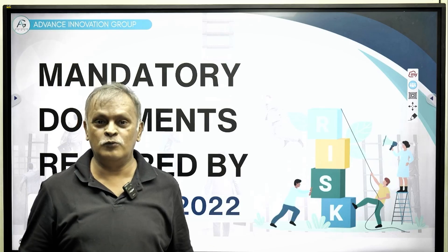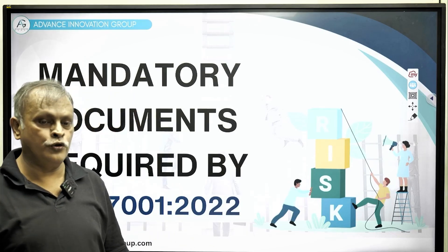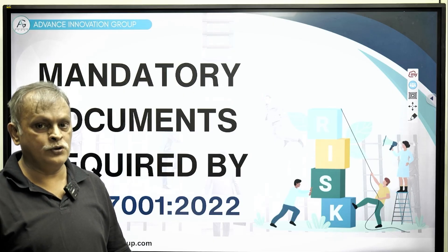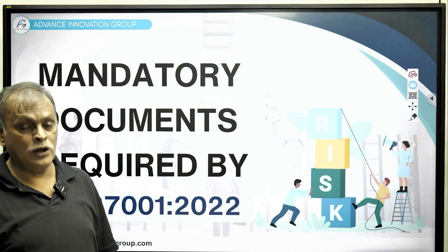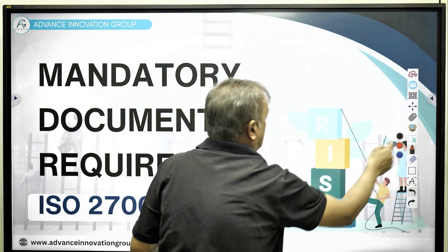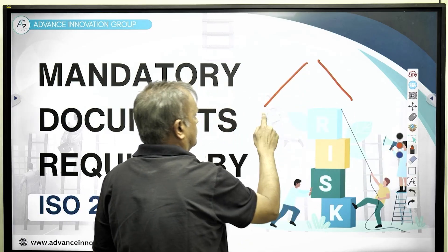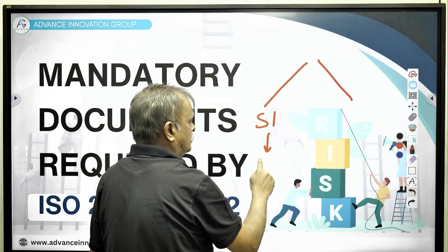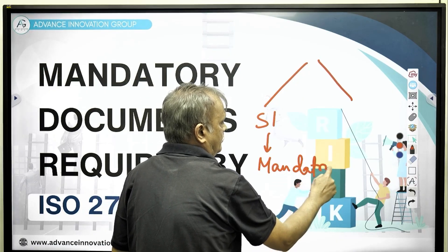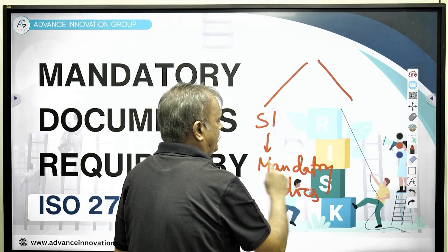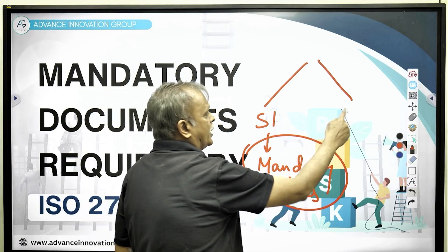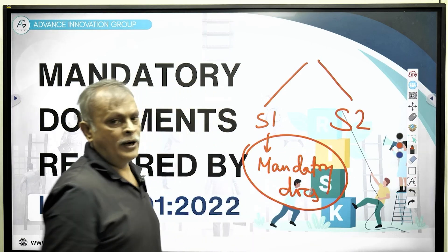Hello and welcome. Welcome to this video in which I'll walk you through the mandatory documents as mandated by the ISO standard of 27001:2022. As you may already understand, ISO audits happen in two stages. Stage 1 is mostly about certain mandatory documents. Only when the auditor receives those mandatory documents will he schedule Stage 2, the implementation audit.